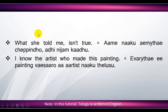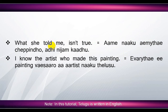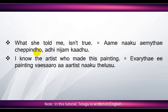'What she told me isn't true' means 'ame naaku yemai te chephiindu, adi nijam kaadu'. Here, 'what she told me' means 'ame naaku yemai te chephiindu'. 'She' means 'ame', 'told' means 'chephiindu', 'me' means 'naaku'. 'Isn't true' means 'adi nijam kaadu'. 'True' means 'nijam', 'isn't true' means 'nijam kaadu'.